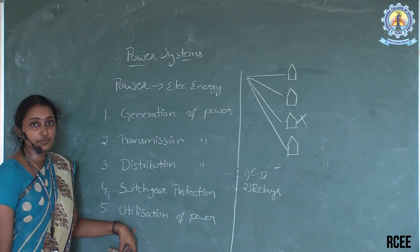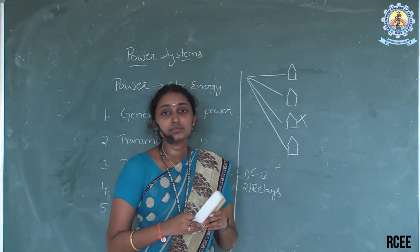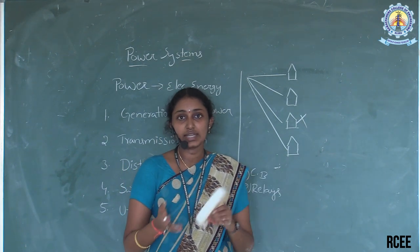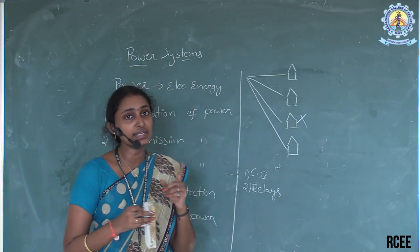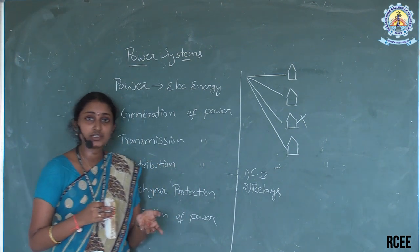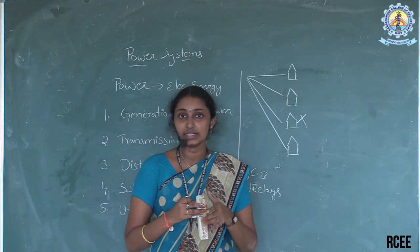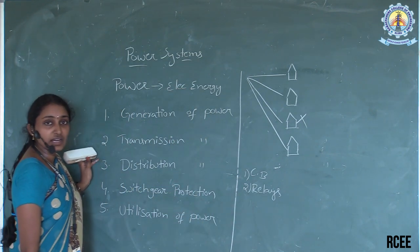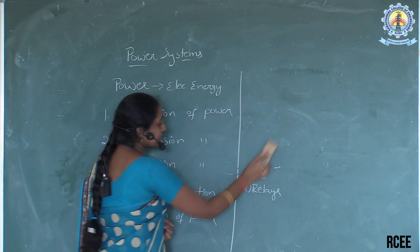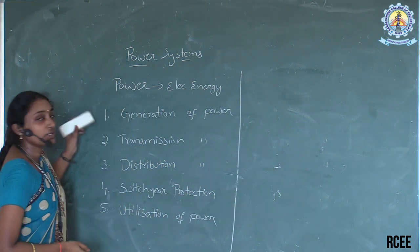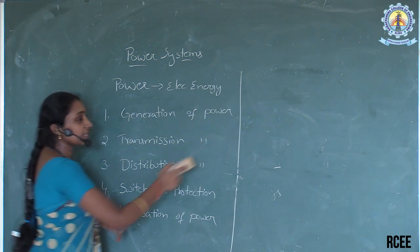Next is utilization of power. Electrical energy is converted into many forms of energy — light energy, mechanical energy (for example, a fan), and heat energy (such as room heaters, water heaters, and induction stoves). So electrical energy can be converted into any other form of energy. In all these stages, the voltage levels are different. Let's see the single-line diagram of the power system.